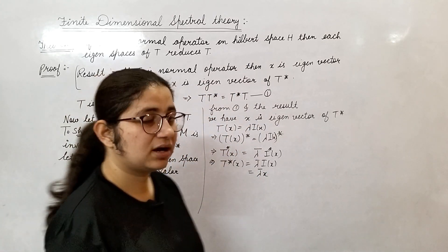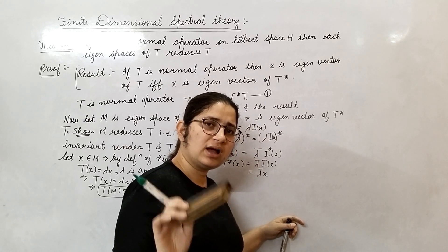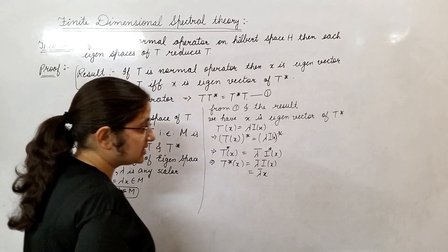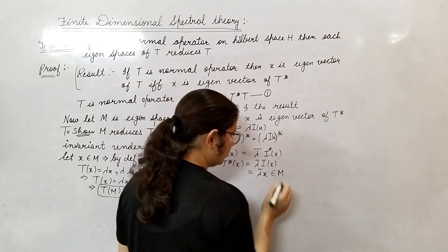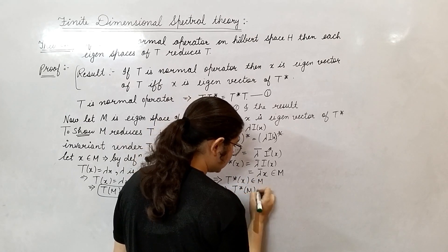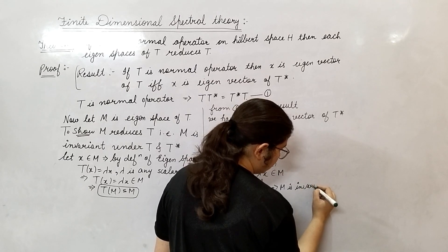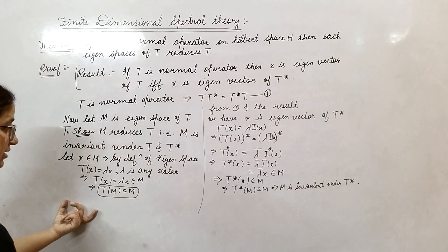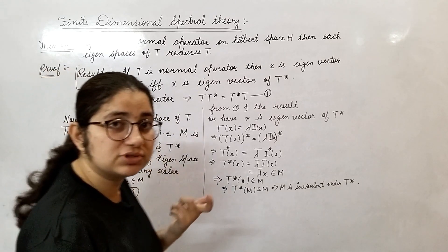Since M is a closed linear subspace of H, this implies T*(x) = lambda bar * x belongs to M. This implies T*(x) belongs to M, which means M is invariant under T*. Since M is invariant under T and M is invariant under T*, we can say M reduces the operator T.